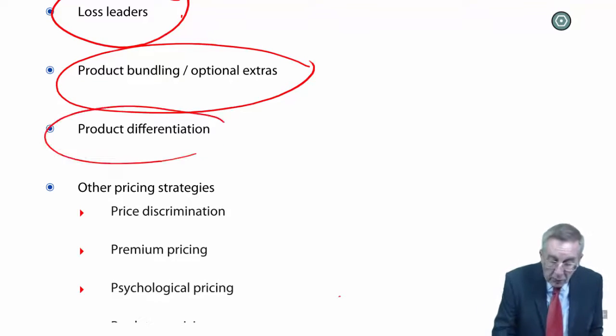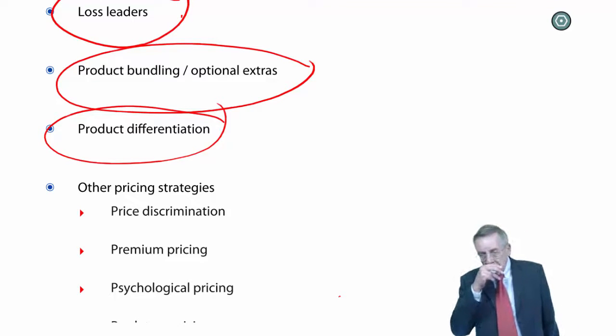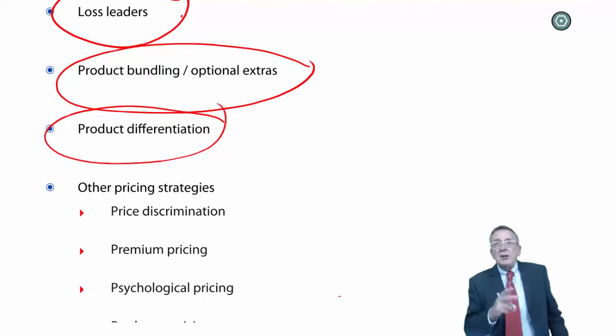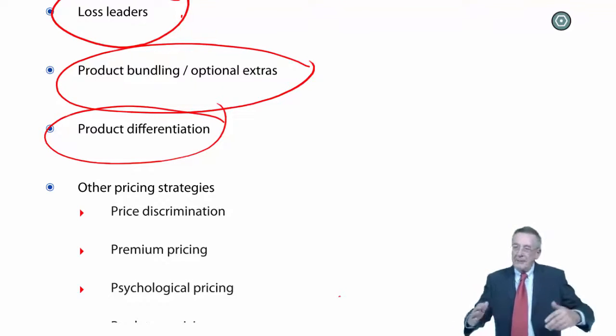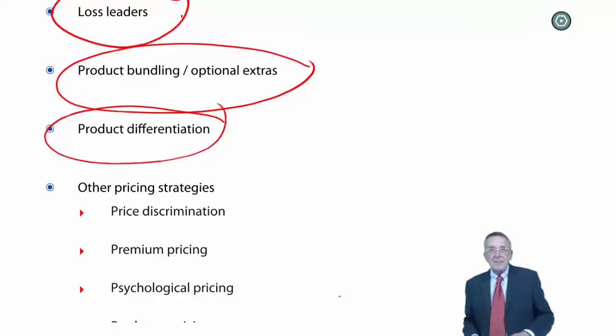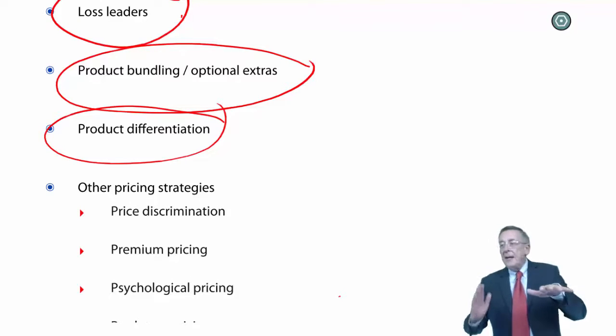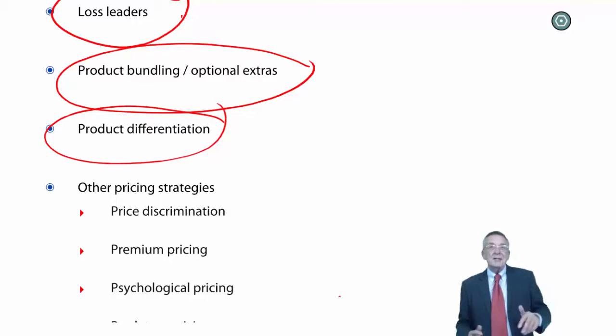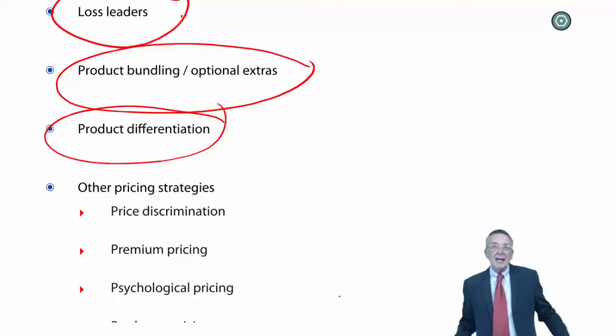And finally, of these main ones, product differentiation. I mentioned cars a minute ago, and obviously, there are lots of manufacturers of cars. Now, for a certain level of car, there are small cars, big cars, different levels. But for any particular level of car, there are lots of different manufacturers of what are very similar cars in terms of the power and the looks and everything else.